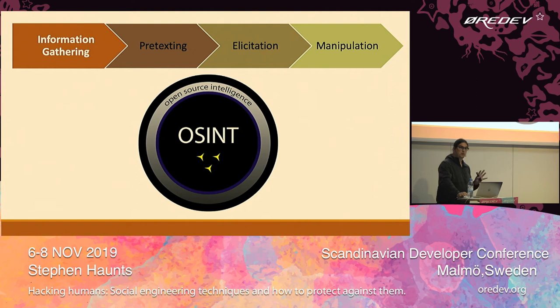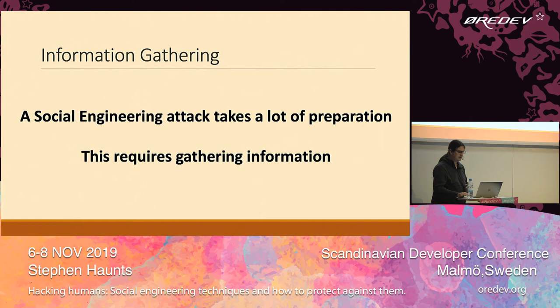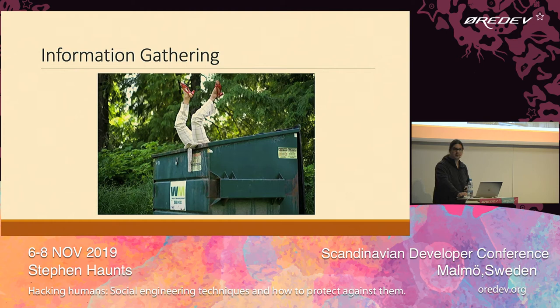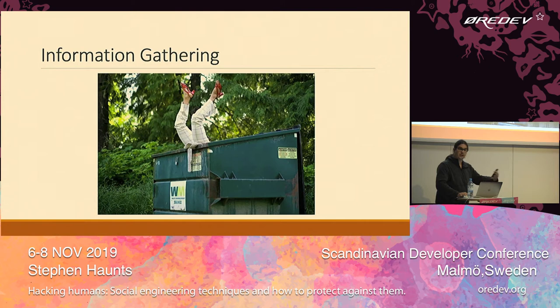The first stage is information gathering — the formal term is open source intelligence, or OSINT. A social engineering attack takes a lot of preparation; you don't just go and manipulate someone without doing your homework first. One of the most common methods is dumpster diving — literally going through someone's bins. You'd be surprised how much information gets thrown away. If you throw away medicine bottles, that gives an indication of illnesses you might have; lots of whiskey bottles in your recycling says something about your pastimes — and all of that can be used as a way of manipulating you further down the line.